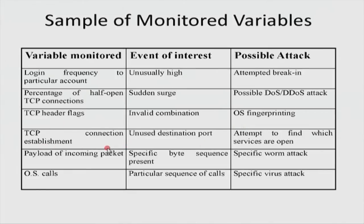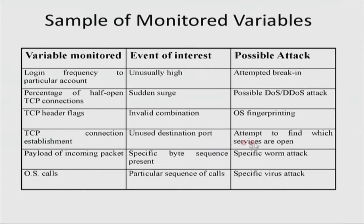You might monitor TCP connection establishment, and in particular connections to unused destination ports. Based on your knowledge of tools like nmap, many connection attempts to invalid ports probably indicates a port scan. Then you alert the system that an attacker from a particular location is probably launching a port scan. You can also look at the payload of incoming packets for a particular byte sequence — if it is a non-polymorphic worm, byte sequences constitute attack signatures.